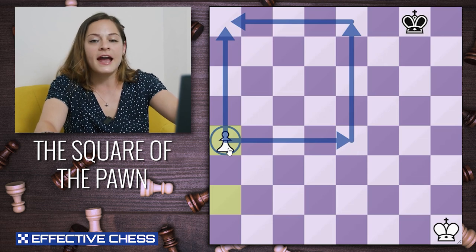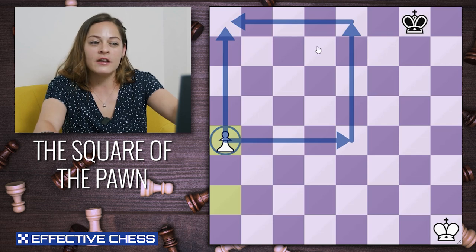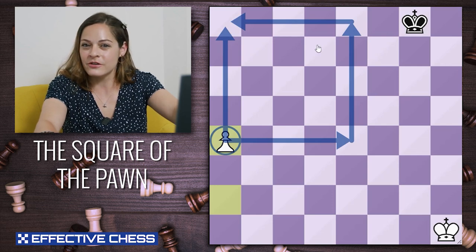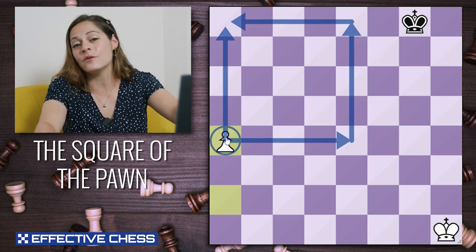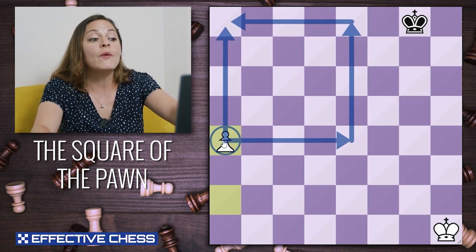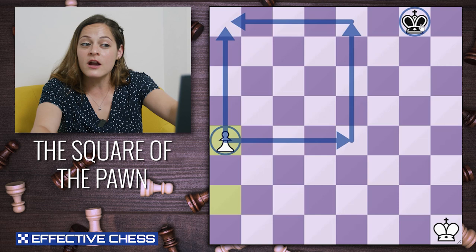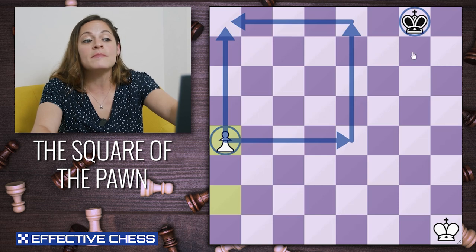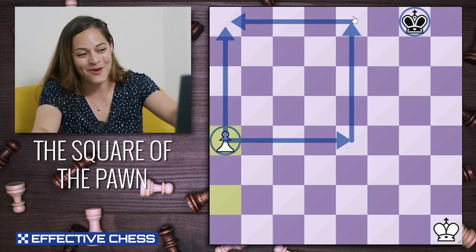I want to ask you something: can the black king go into this square on their turn? If the answer is no, then this pawn is unstoppable. It doesn't need anyone's help — it's going to turn into a queen. However, if this king could enter that square, that means the king is in the square of the pawn and it can catch the pawn.